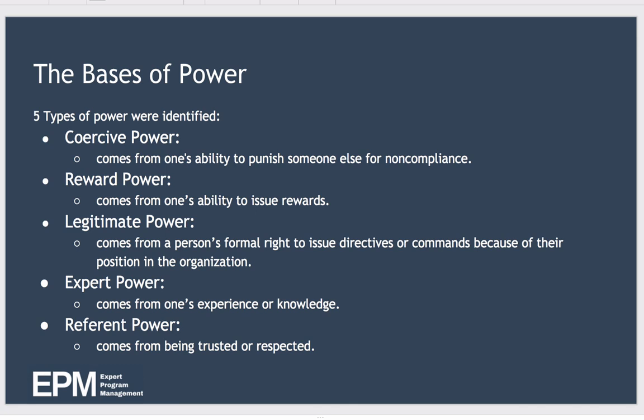Secondly, reward power, which comes from one's ability to issue rewards — for example, through a bonus or perhaps allowing time off in lieu. Thirdly, legitimate power, which comes from a person's formal right to issue directives or commands because of their position in the organization. For example, the CEO has the right to dictate strategy — that comes from a legitimate power base.